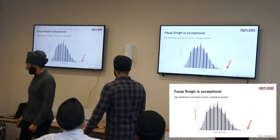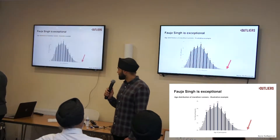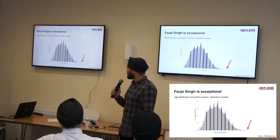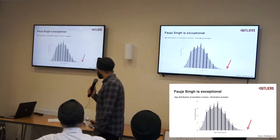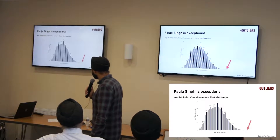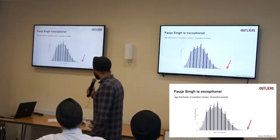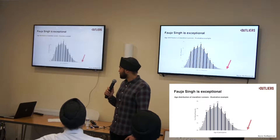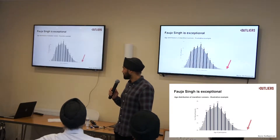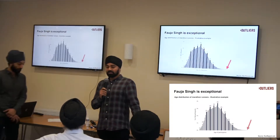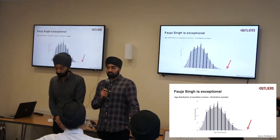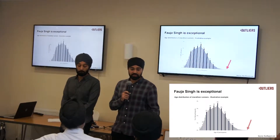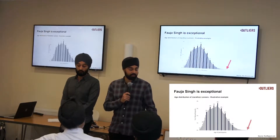He's clearly exceptional. Looking at the data — and I'm a data person, this is what I get kicks out of — he's not even on this scale. The chart finishes at about 75, and he's nowhere near that. This is a distribution of everyone who's a marathon runner, and statistically, he is an outlier.